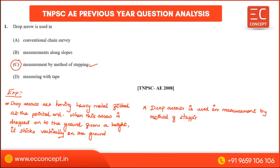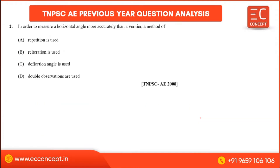Next question: In order to measure a horizontal angle more accurately than the least count of the vernier scale, a method of repetition is used. The answer for this question is method of repetition.